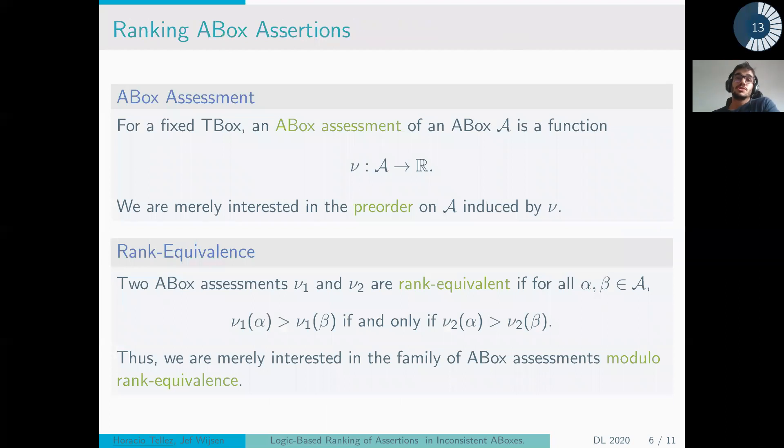Because we are only interested in the order that comes from the function, whenever two different assessments, ν₁ and ν₂, give the same order, we call them rank equivalents and they are the same in our eyes. Thus, we are really interested in the family of A-box assessments modulo rank equivalents.